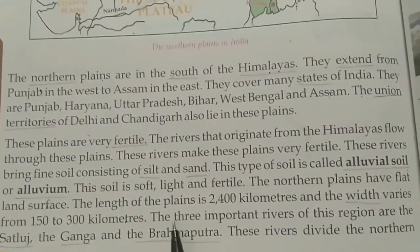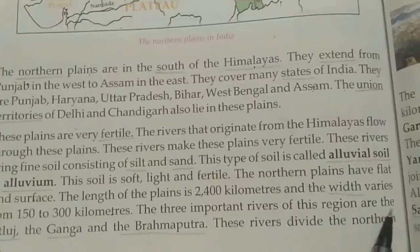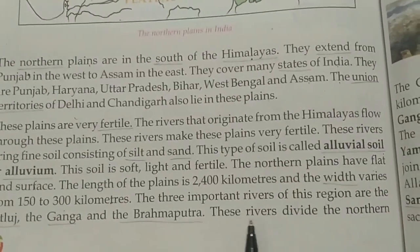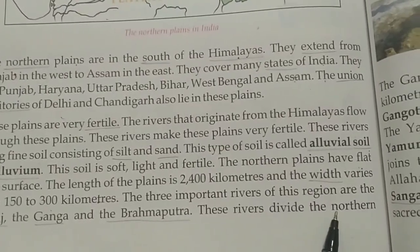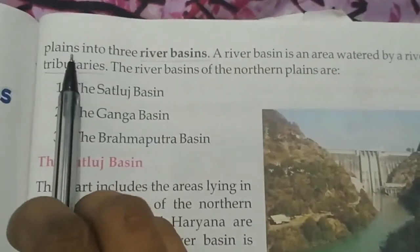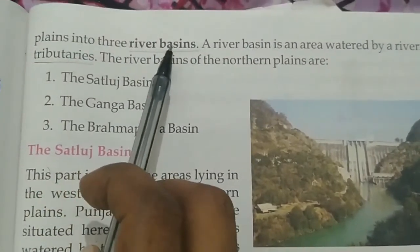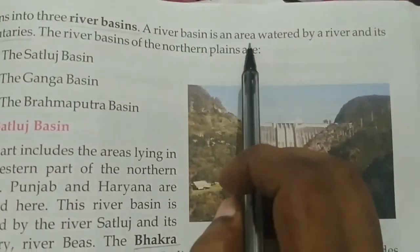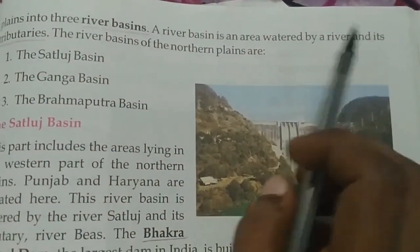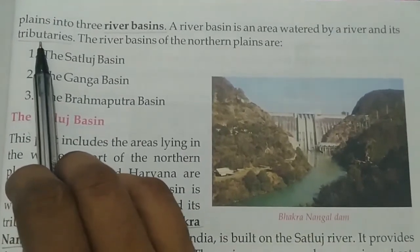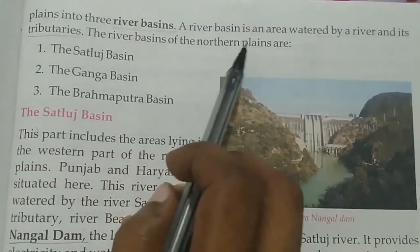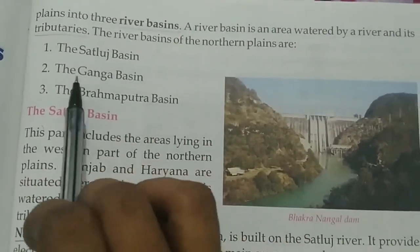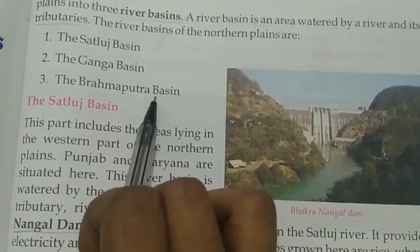The three important rivers of this region are the Satluj, the Ganga and the Brahmaputra. These rivers divide the Northern Plains into three river basins. The river basins of the Northern Plain are the Satluj basin, the Ganga basin and the Brahmaputra basin.